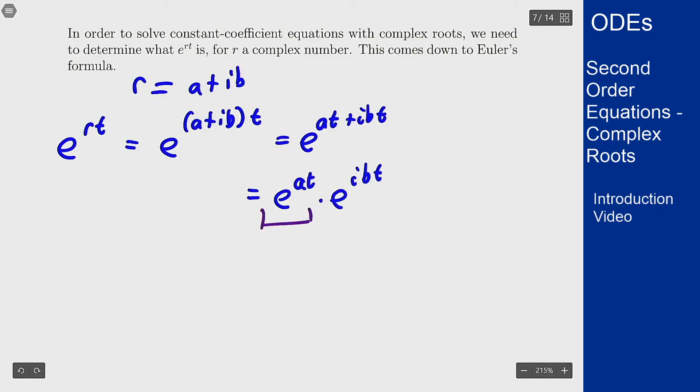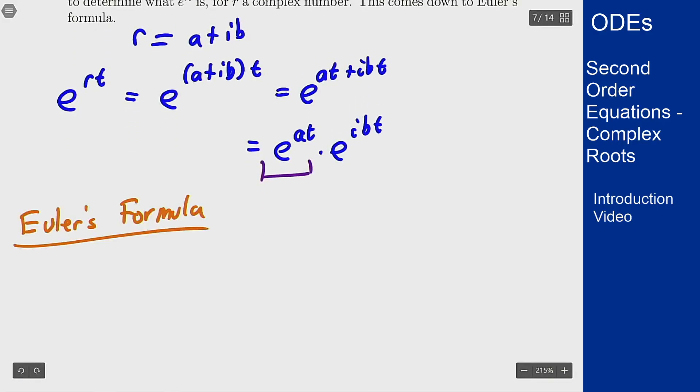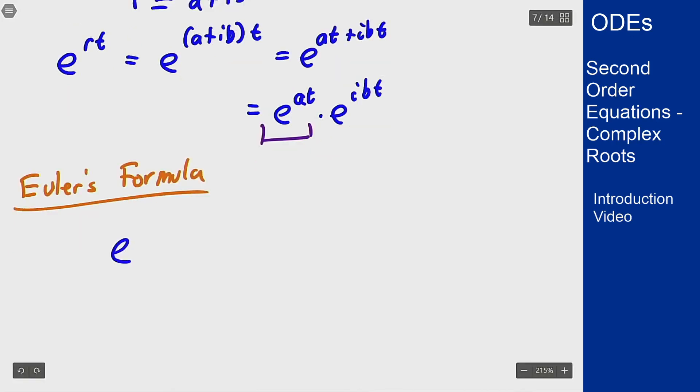What about this e^(ibt) business? That's where Euler's formula comes into play. Euler's formula says that e^(ix) for any x is equal to cos(x) + i·sin(x).